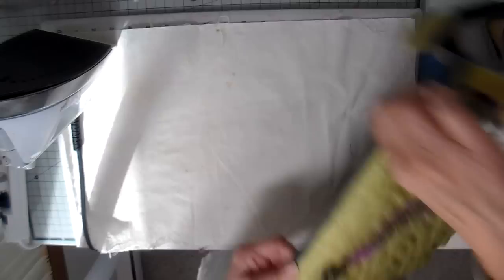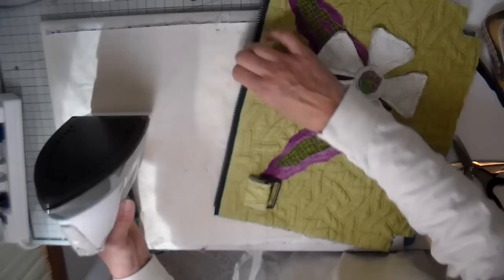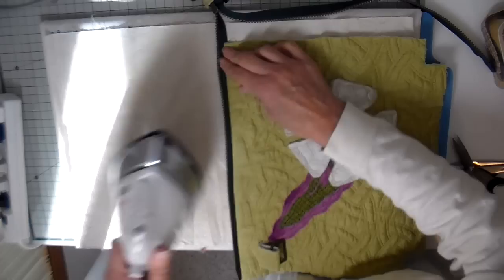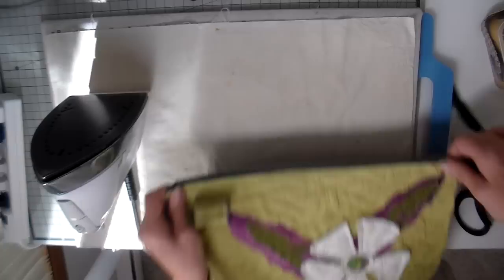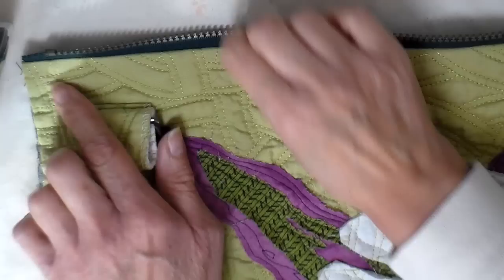Once I get my zipper to that point, then it's a matter of just ironing this down. I just want to make sure that that lining fabric is away from the zipper, getting it all nice and flat, spraying it with some water. And then I am just going to be pressing this. Once I get that part done, it's on to doing a top stitch. I'm going to just top stitch all the way down.